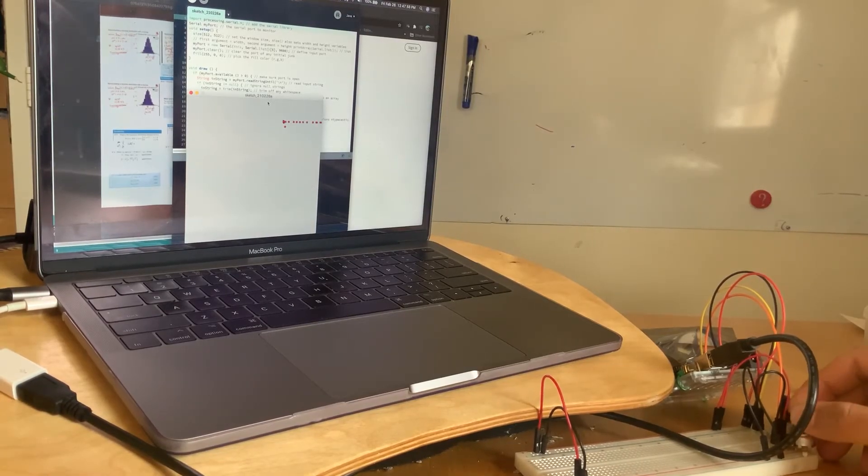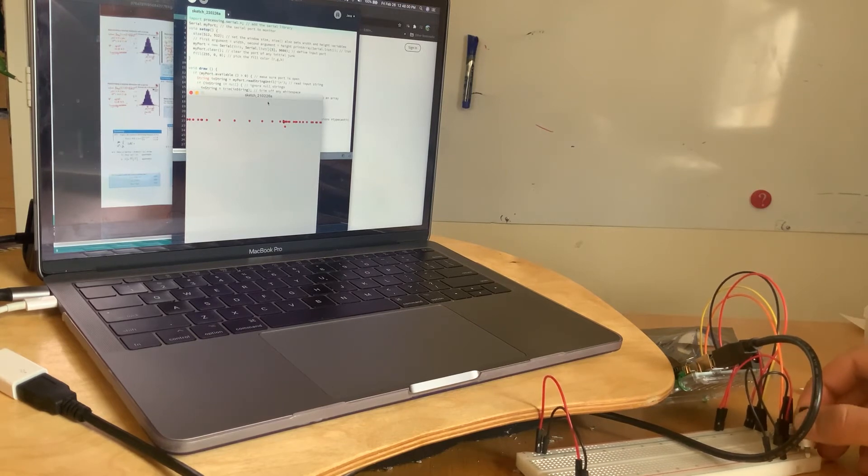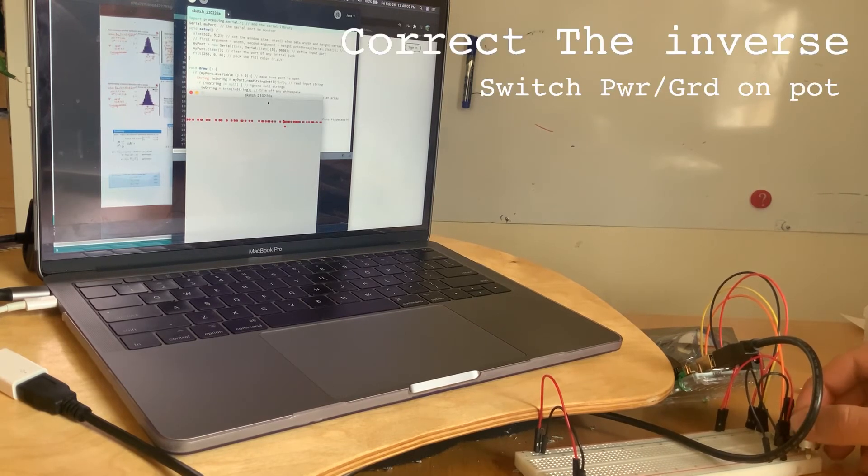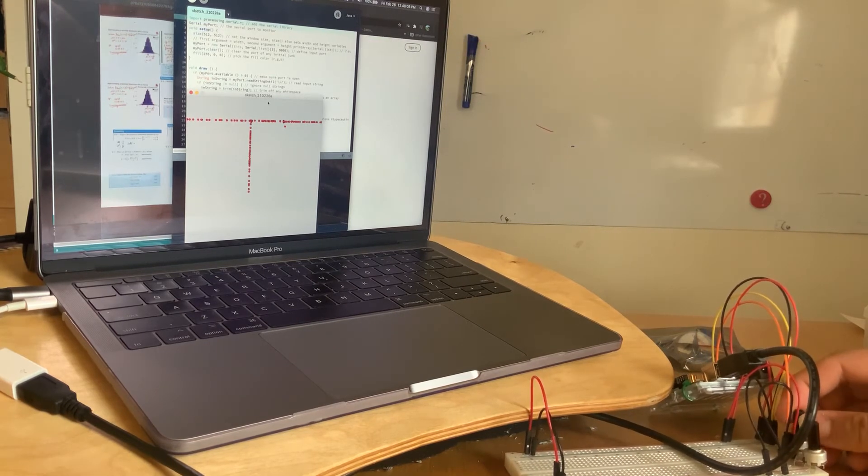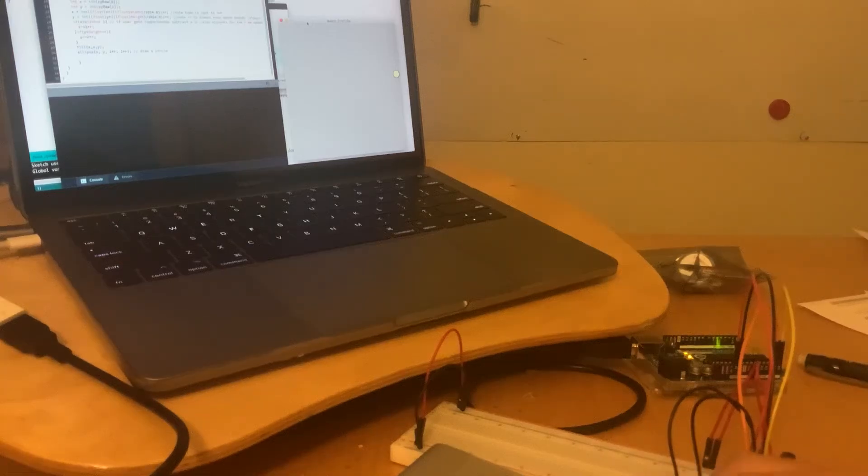Okay, so I got my left dial now helping me go left to right, except it's kind of inverse. When I turn it left, it goes to the right. I got this right one. This right one actually goes up and down properly.